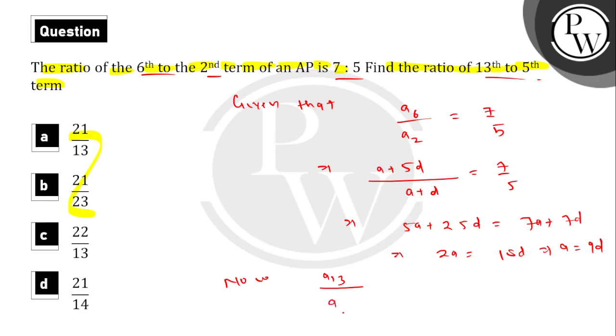A13 would be a plus 12d upon a5 which is a plus 4d. Since a is equal to 9d, the value of a13 upon a5 is equal to...